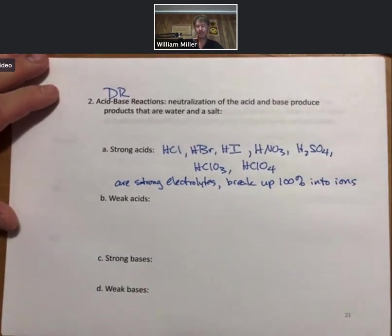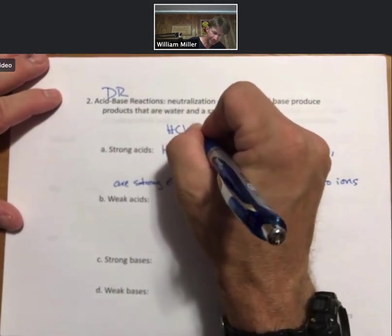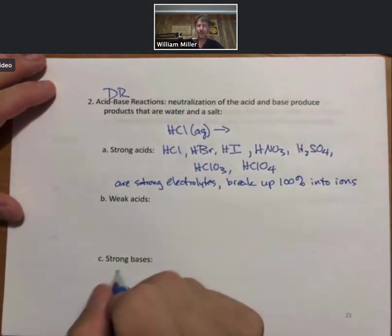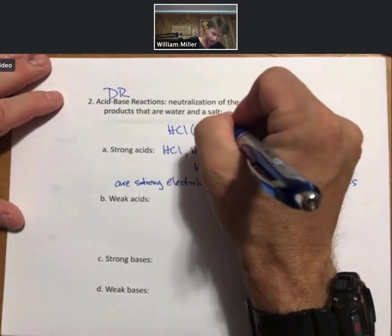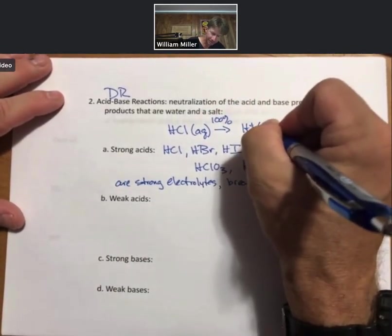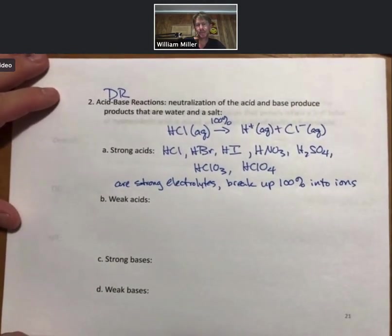And the classic example which I'll put up at the top here. You take HCl. It breaks up 100% into hydrogen ions and chloride ions. Strong acids are strong electrolytes. Please remember that.